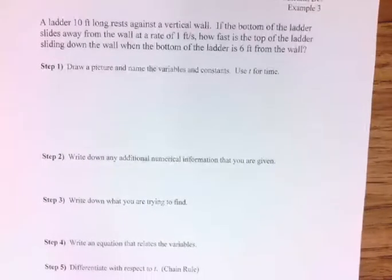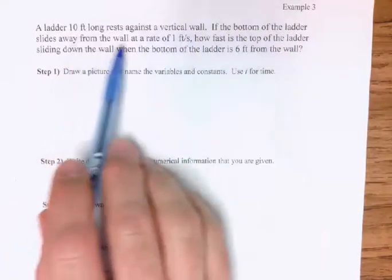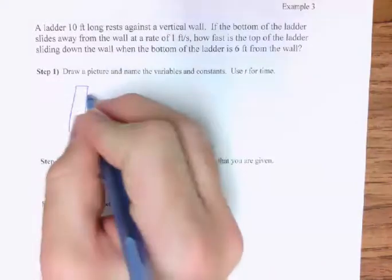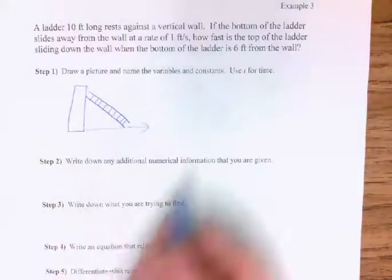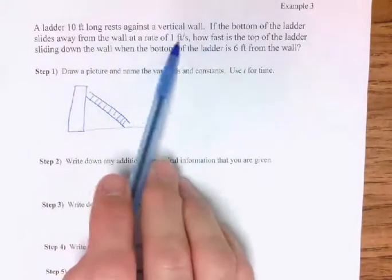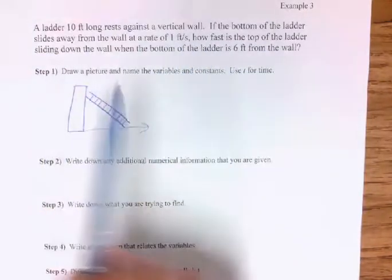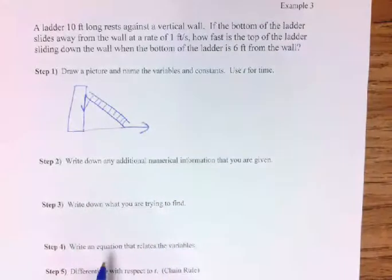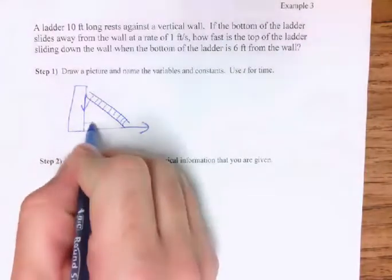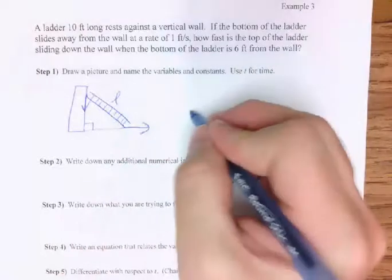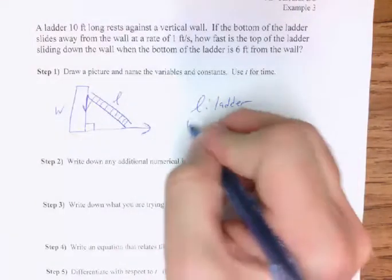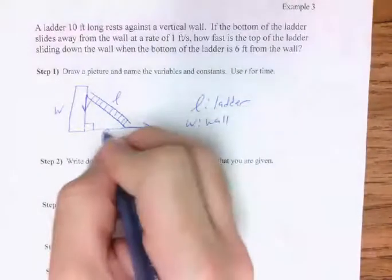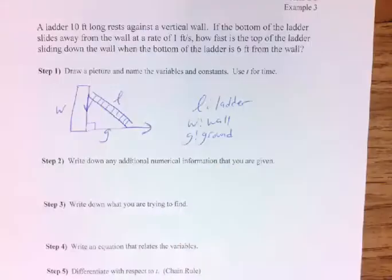If you hit play, that means you need a little help or want to check your answer. We've got a ladder resting against a vertical wall — the bottom of the ladder slides away from the wall. So I've got some kind of wall and some kind of ladder. The ladder is sliding away from the wall. The bottom slides away at a rate of one foot per second. How fast is the top of the ladder sliding down the wall? The top is going down, the bottom is going out.